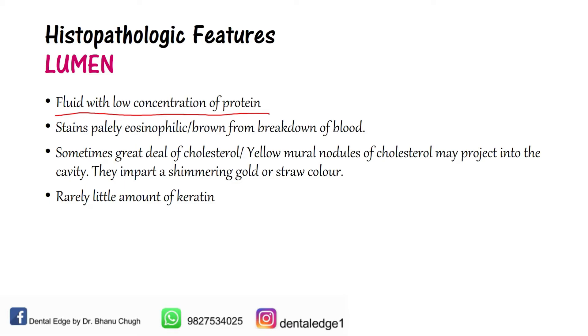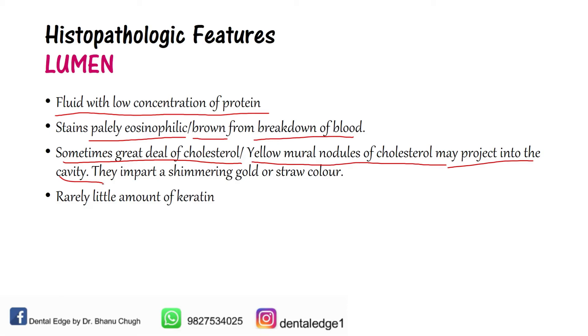Coming to the lumen — it will show fluid with a low concentration of protein. It is pale eosinophilic, and sometimes brown due to breakdown of blood. Cholesterol may be extruded into the lumen, so sometimes grey or yellow mural nodules of cholesterol may project into the cavity, imparting a shimmering gold or straw colour to the cystic fluid. Rarely, a little amount of keratin may be present.